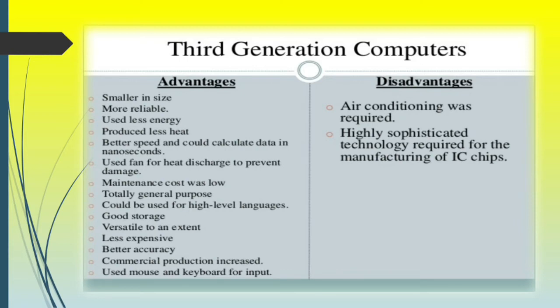They had good storage, were versatile to an extent, and very less expensive with a better accuracy rate. They were used in commercial production and used mouse and keyboard for input. The disadvantage was that air conditioning was still required, and highly sophisticated technology was needed for manufacturing of IC chips.